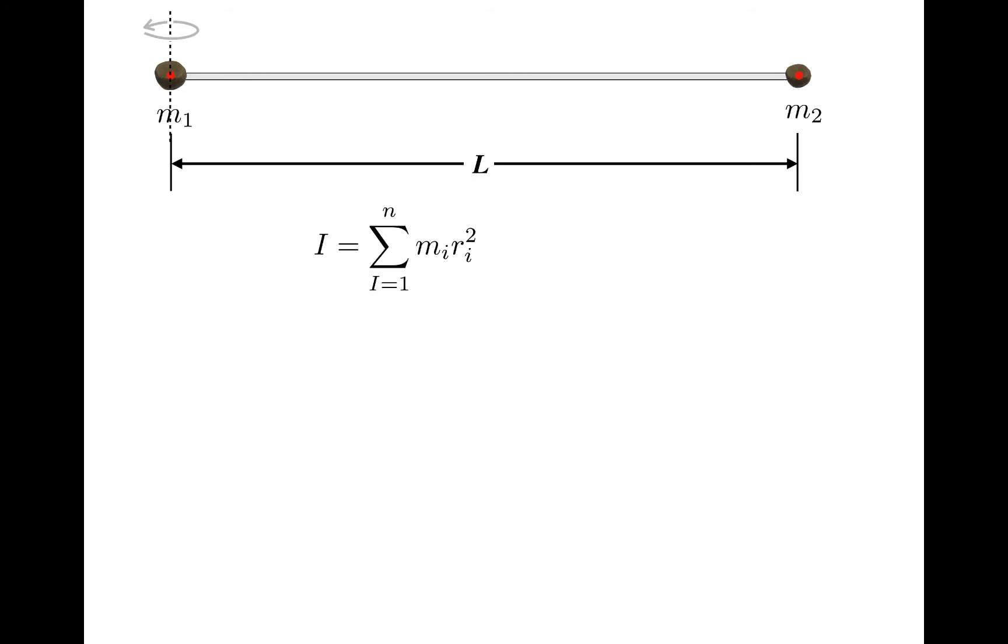m1 is located right at the origin, and m2 is located at a distance L away from the axis of rotation. So in this case, the rotational inertia is m1 times 0 squared plus m2 times L squared. And I can rewrite that as m2 L squared.